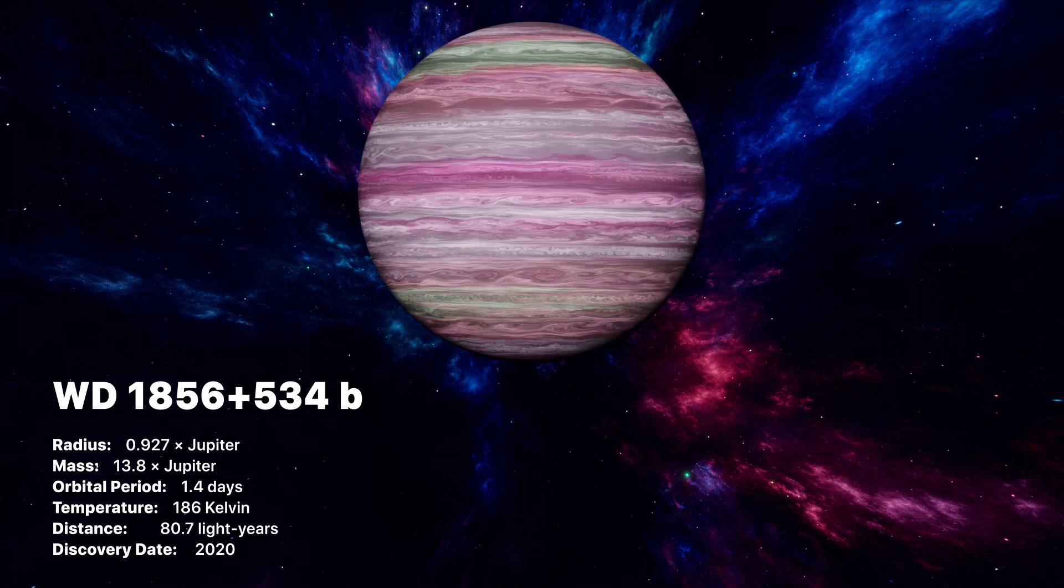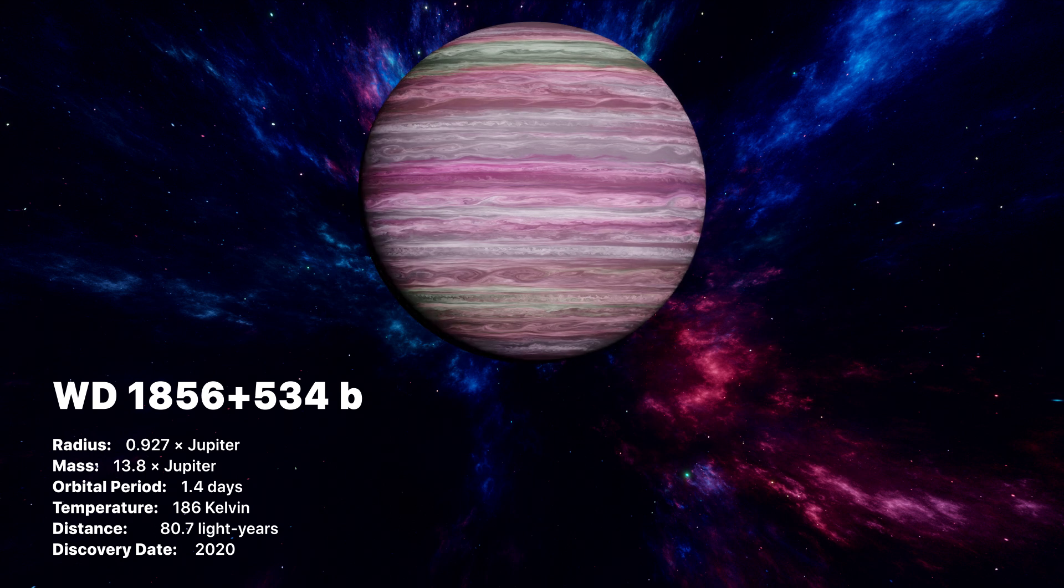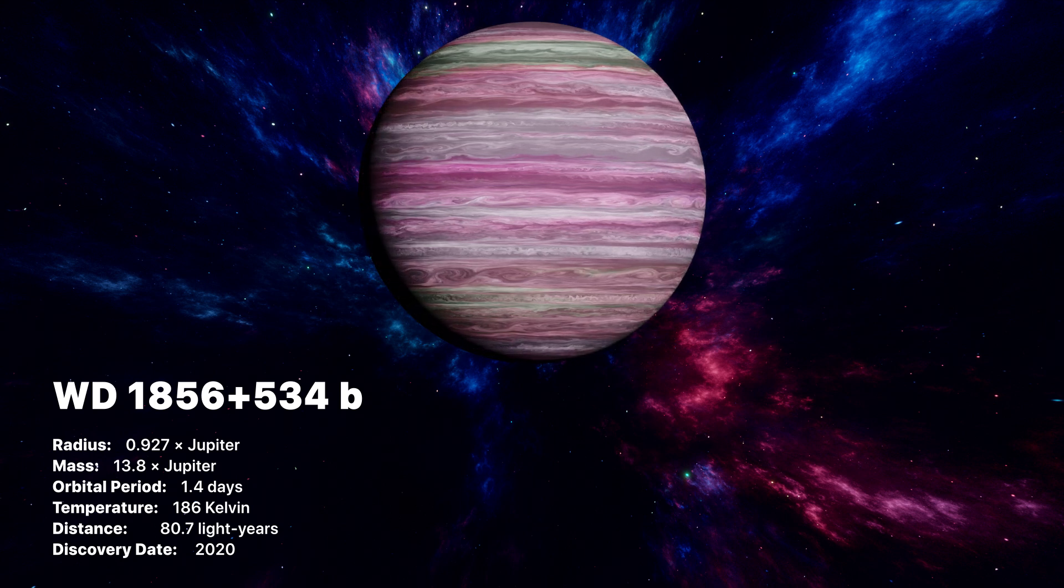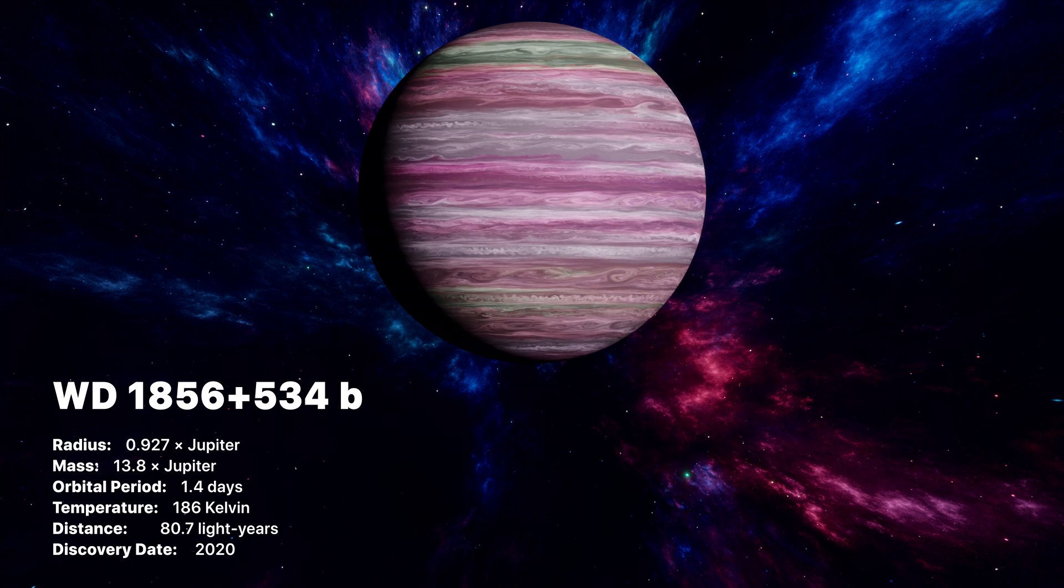Meet WD 1856 plus 534 b, the coldest exoplanet in the universe that we know of. Discovered in 2020, about 80 light years away.